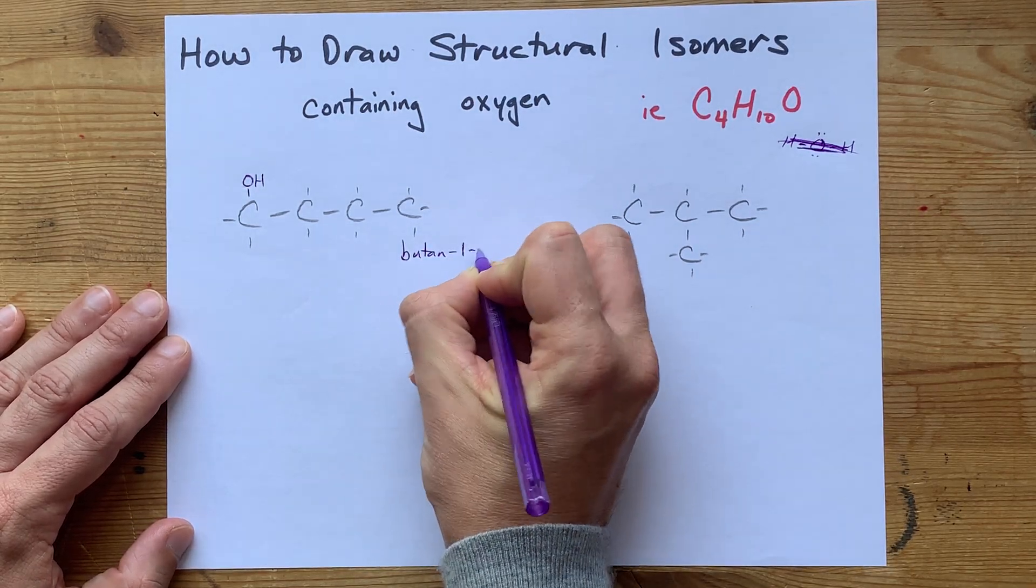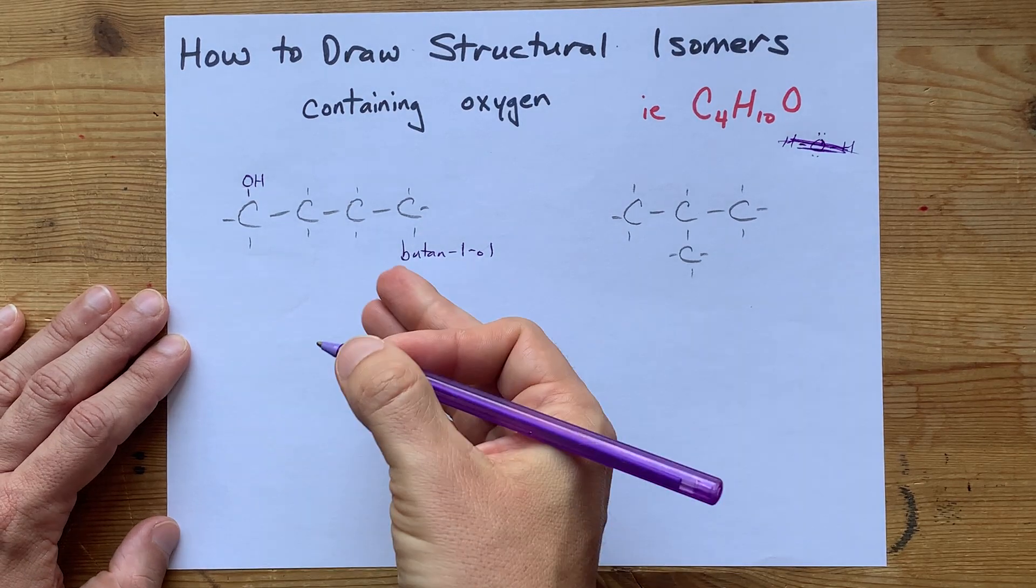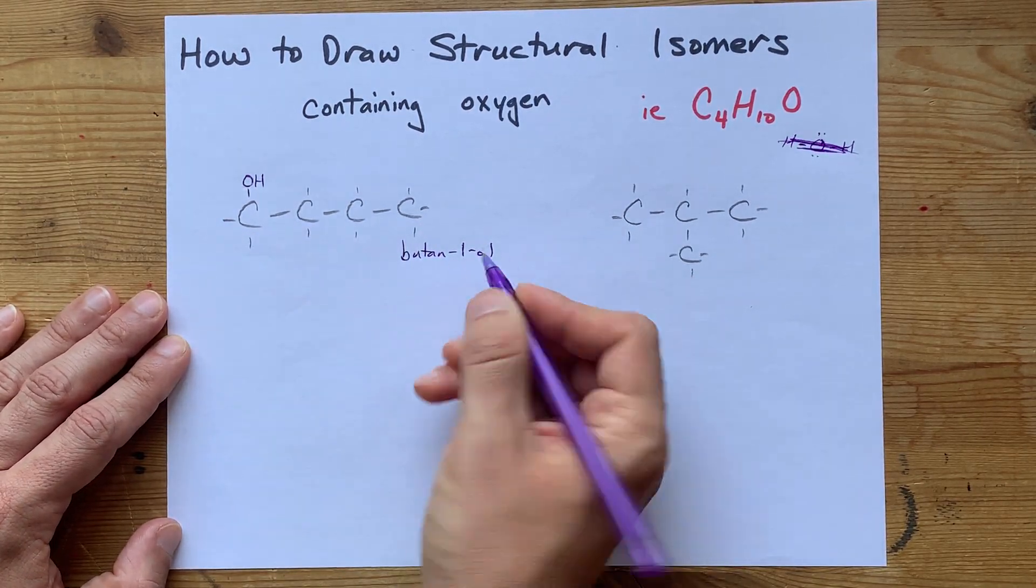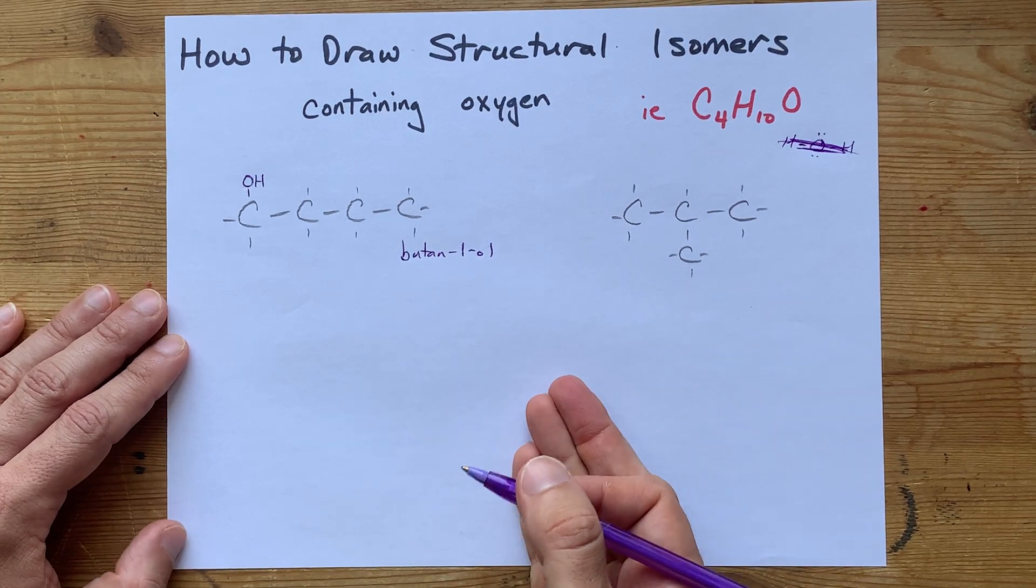I'm going to start out by inserting them between carbons and hydrogens. Maybe instead of a hydrogen on this first carbon, I have an O and then an H. That gives me C4H10O. That's an alcohol. That's butane 1-ol.